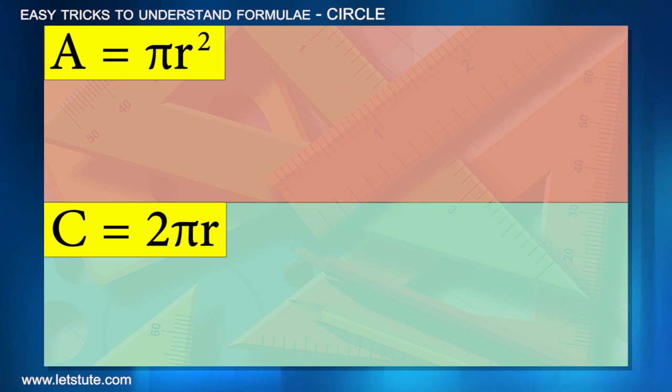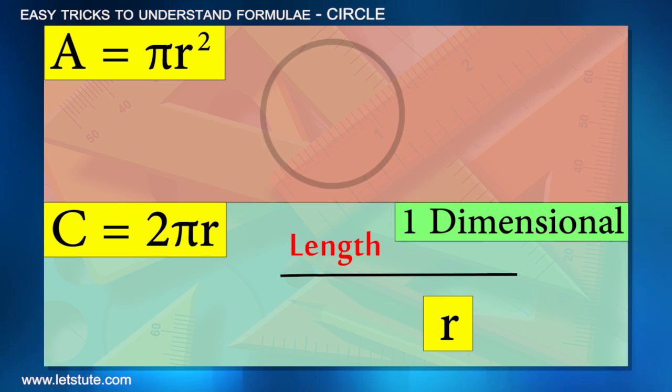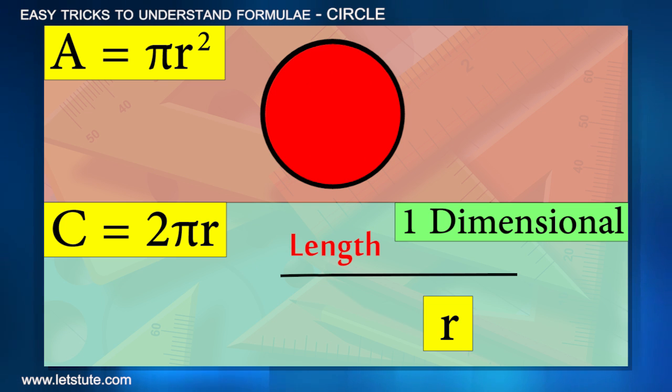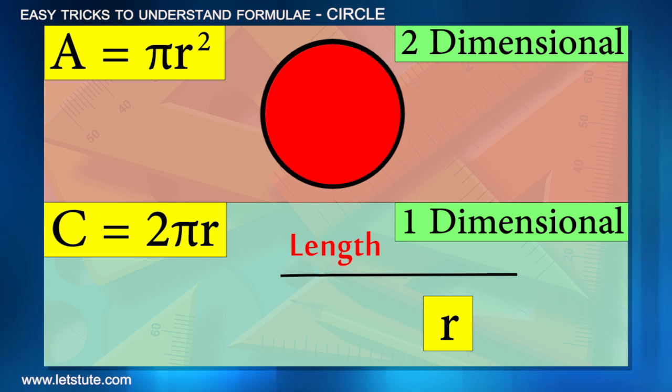These are the formulas for area and circumference. If you're still confused, remember that circumference is just length, so it has only r, which means it's one-dimensional. Area is the space covered by the circle, which is two-dimensional, so it will always be r².